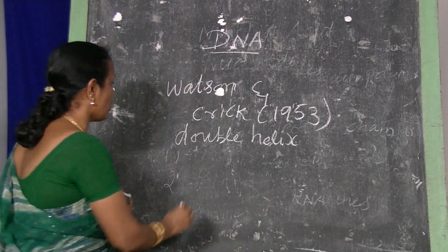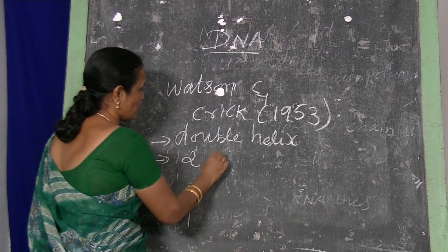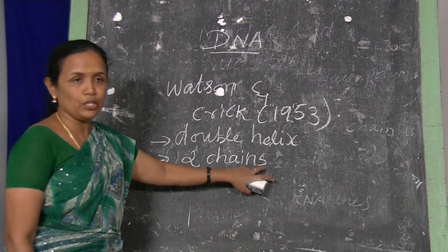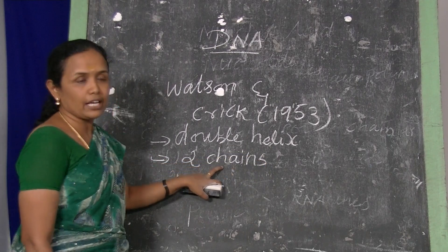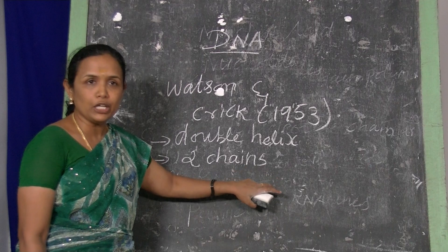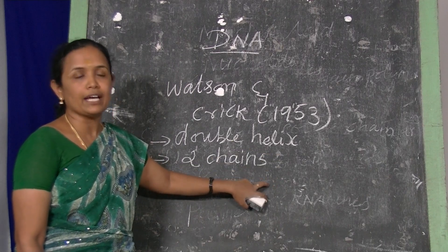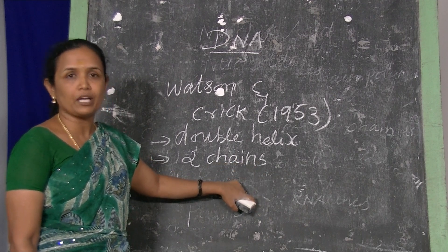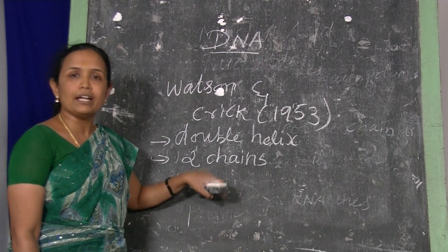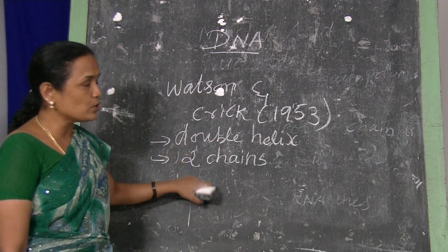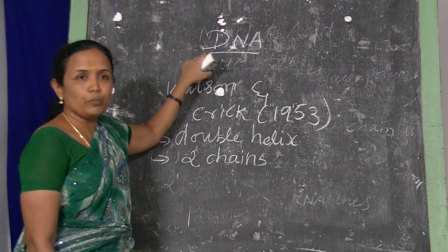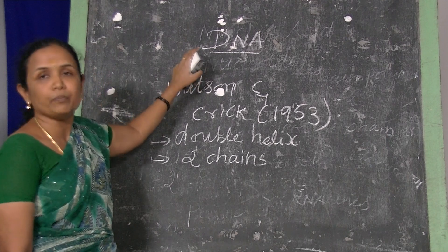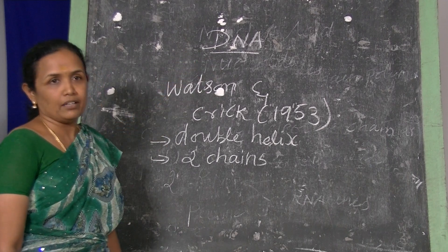DNA consists of two chains, and each chain is a polynucleotide. Each polynucleotide chain is made up of many nucleotides. Each nucleotide consists of three different chemical components: the sugar phosphate group, deoxyribose sugar, and nitrogenous bases. The nitrogenous bases present in DNA are purines and pyrimidines. Purines are adenine and guanine, and pyrimidines are cytosine and thymine.